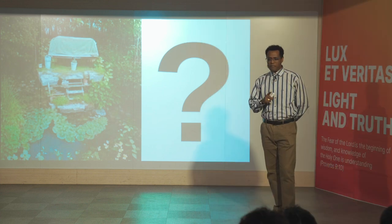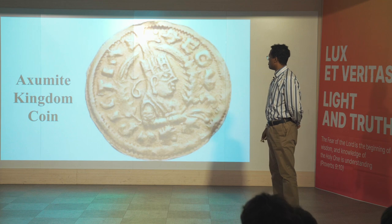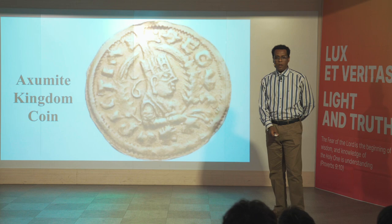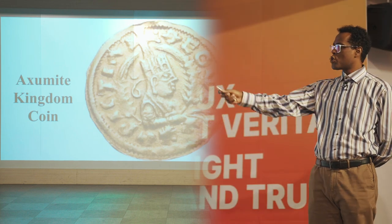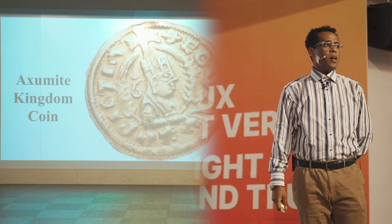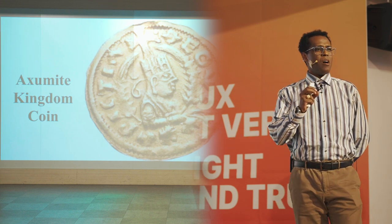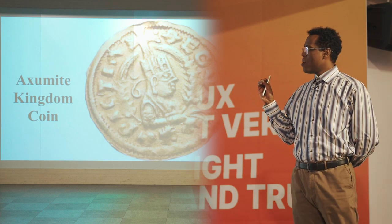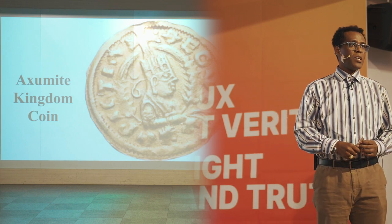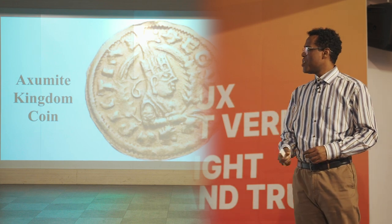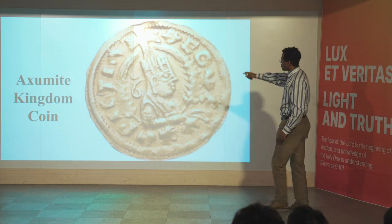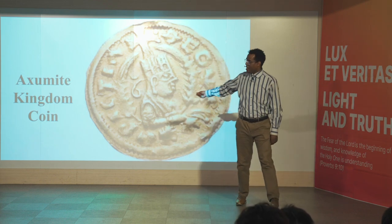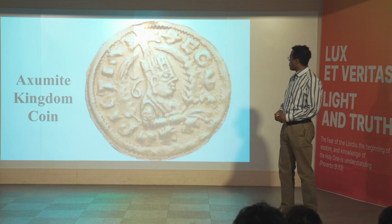I remember previously I showed you this picture in my chapel sermon. This is a coin — a fourth century coin in the Aksumite Kingdom. This coin is also regarded as the first Christian coin artifact that contains the Christian symbol. On the top, there is a cross, and the emperor's image is also on the coin.